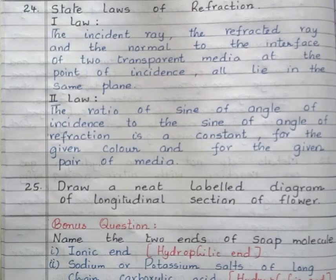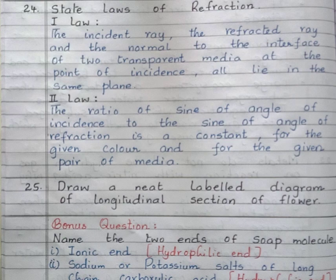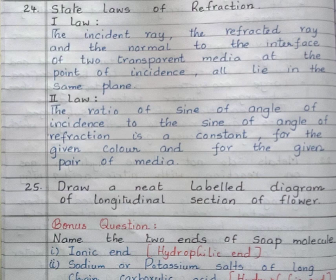Next question: State the laws of refraction. First law: the incident ray, the refracted ray, and the normal to the interface of two transparent media at the point of incidence all lie in the same plane. Second law: the ratio of the sine of the angle of incidence to the sine of the angle of refraction is constant for the given color and for the given pair of media. These are the two laws of refraction.